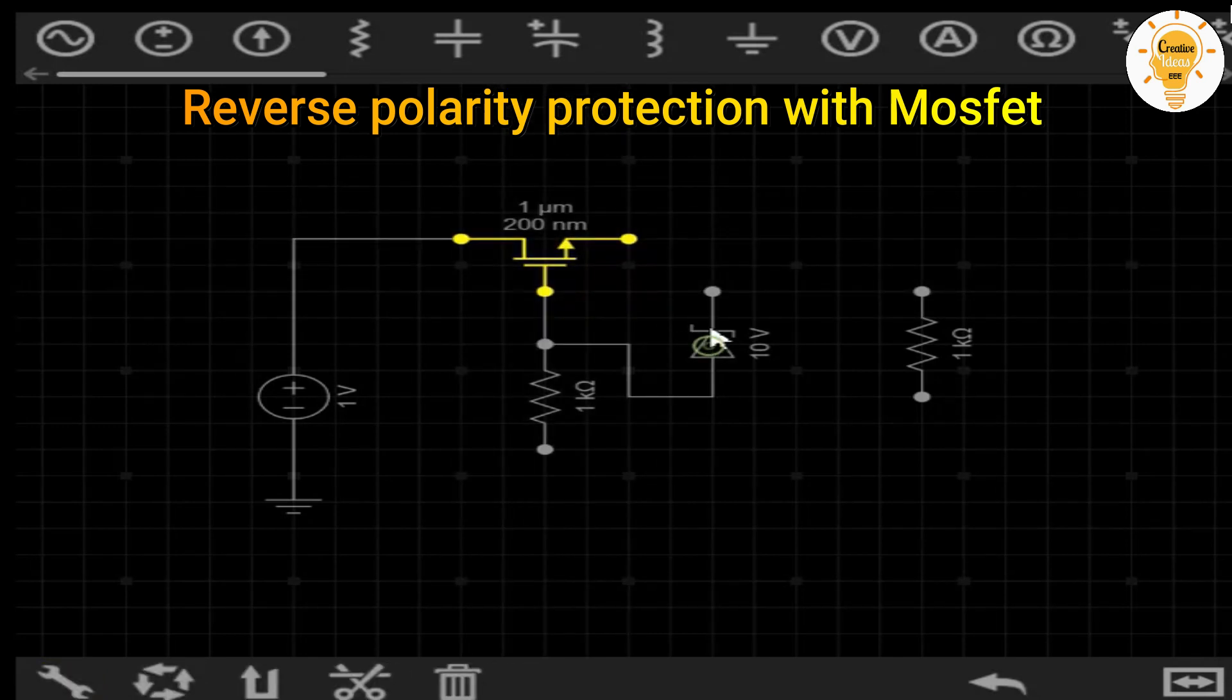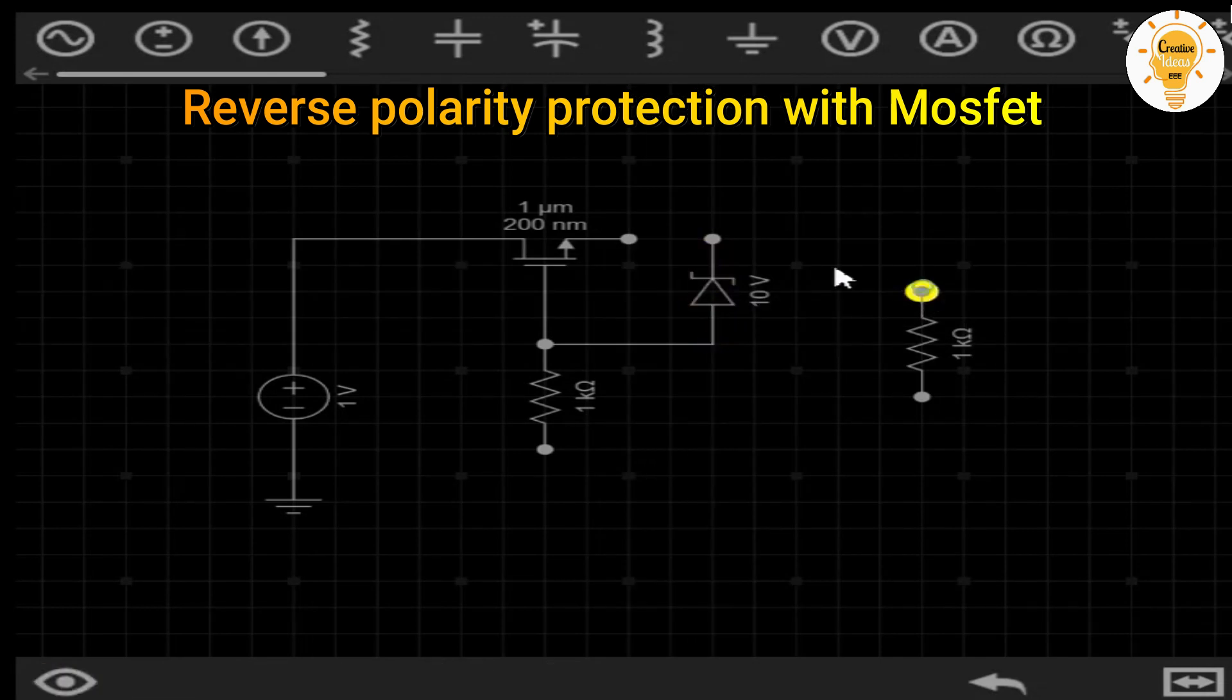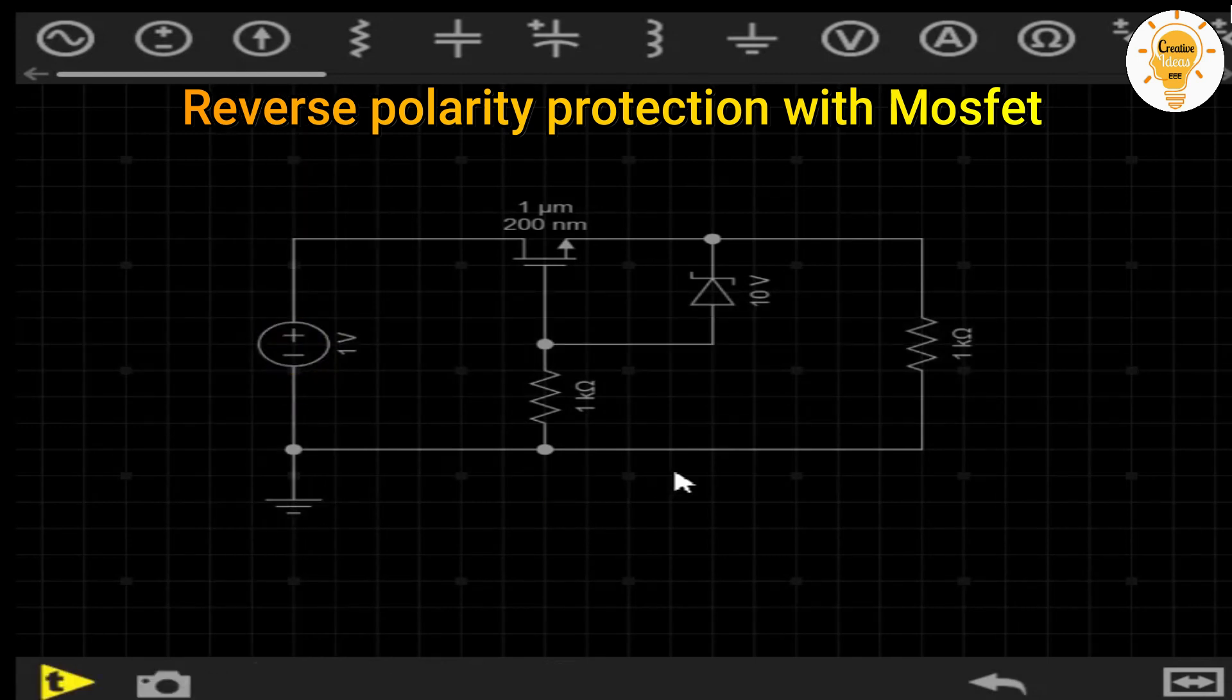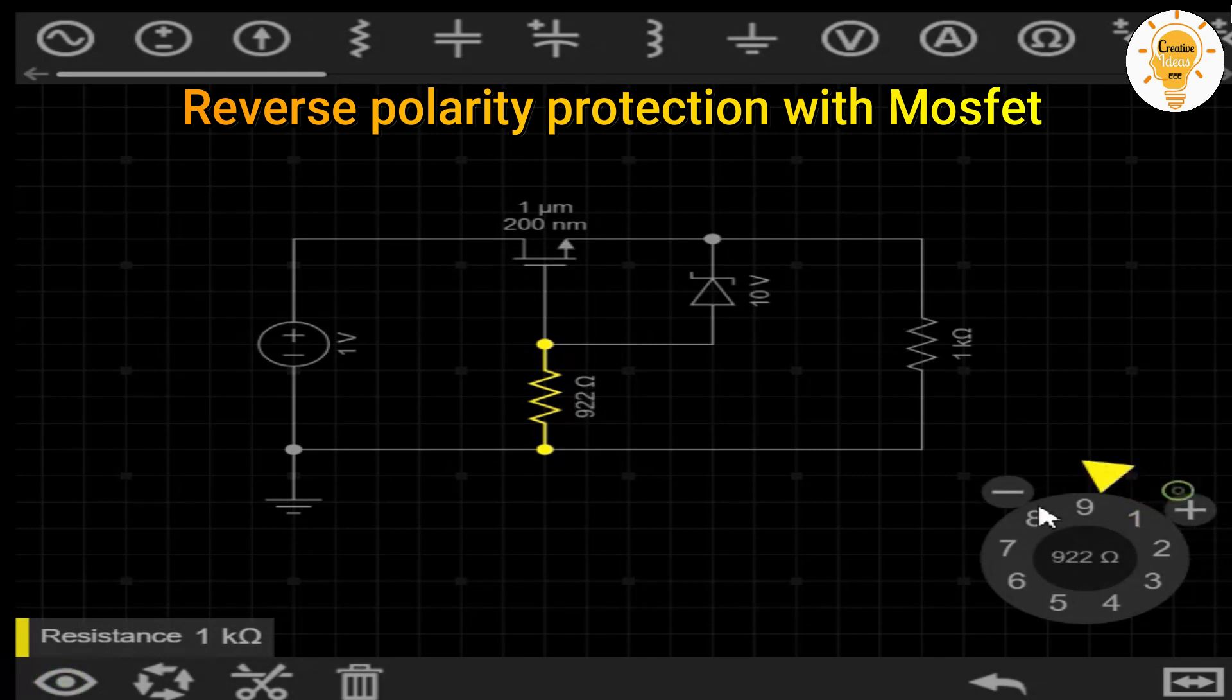In the event that the source is connected in reverse, the base emitter voltage will be equal to zero. This will cause the MOSFET to stay cut and therefore not conduct. Also the internal diode of this will be reverse biased, so it will not let the current pass either.